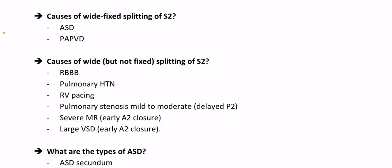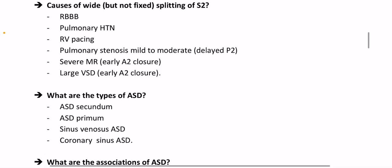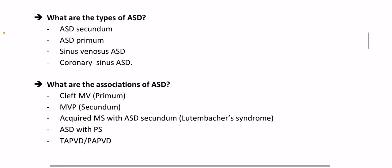What are the types of ASD? ASD secundum, ASD primum, sinus venosus ASD, and coronary sinus ASD. What are the associations of ASD? Cleft mitral valve with ostium primum; mitral valve prolapse with ostium secundum; acquired MS with ASD secundum — that is Lutembacher syndrome; ASD with pulmonary stenosis; TAPVD and PAPVD.